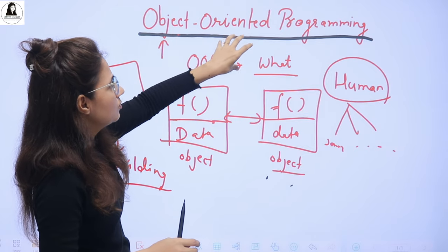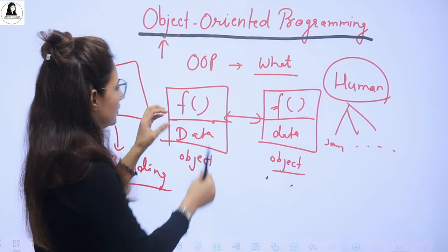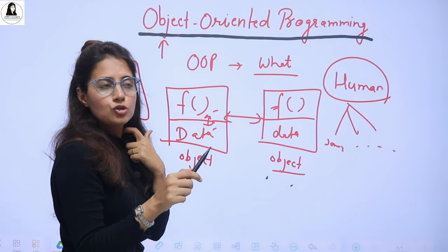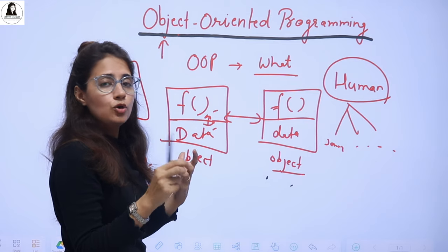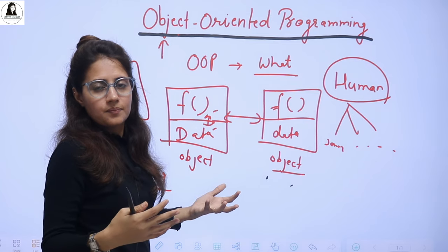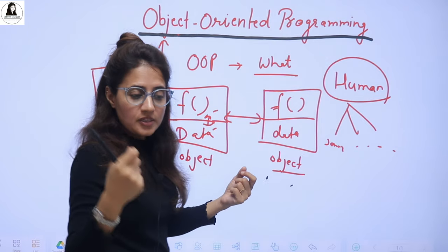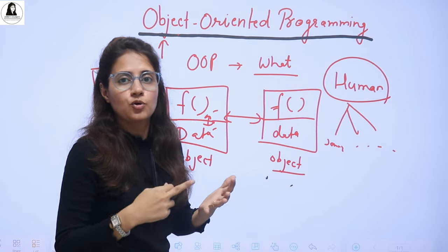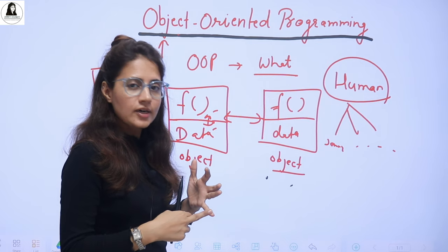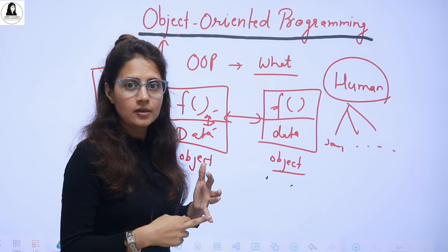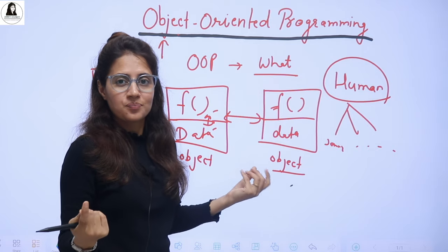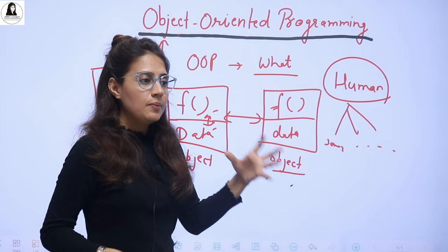Now, what are the advantages of Object Oriented Programming? Here the data and the functions are bound closely with each other, so data will not move freely in the program. So more data security is there. And to secure the data, we can specify access specifiers: public, private, protected. If you want to make your data public — available to everyone — you can make it public. If you want to make it private, you can do that using access specifiers.